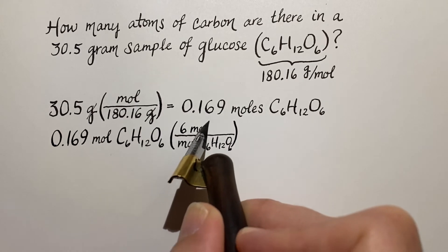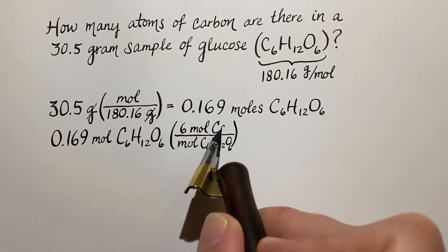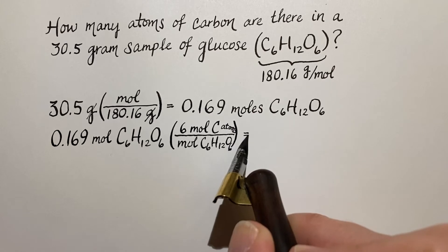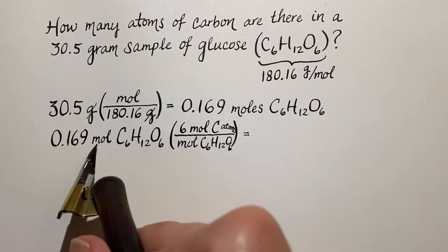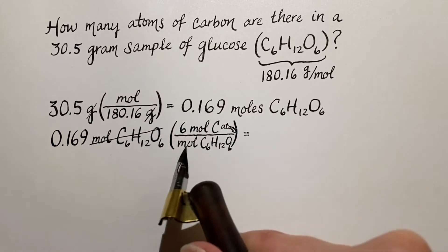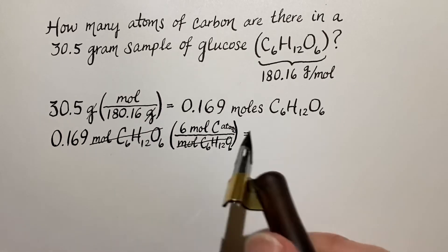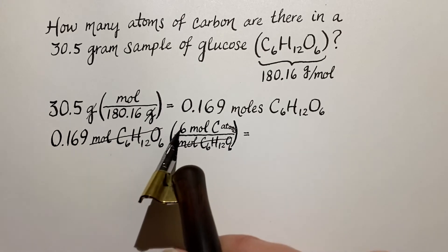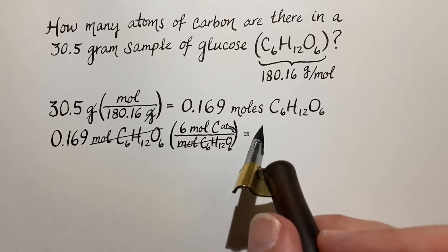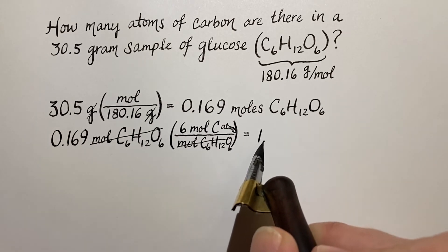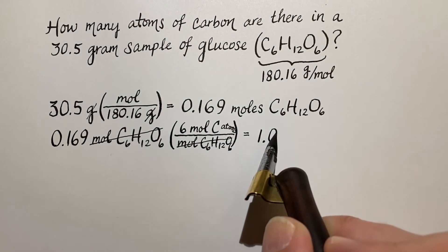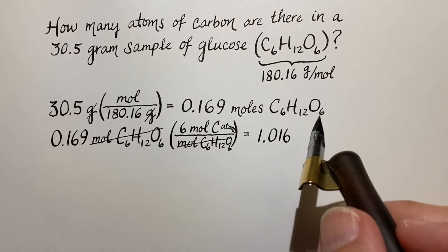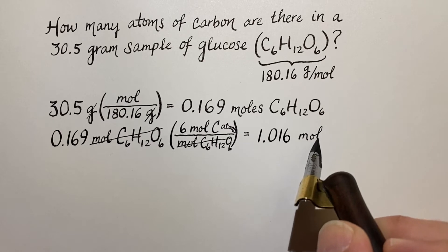So there's six moles of carbon atoms. Okay, so now we have moles of glucose that cancels, so we are essentially multiplying 0.169 times 6 and we get 1.016 moles of the carbon atoms.